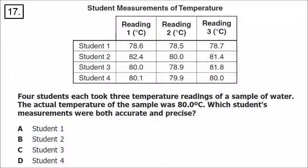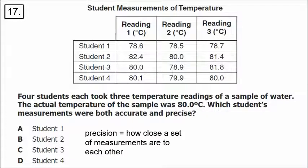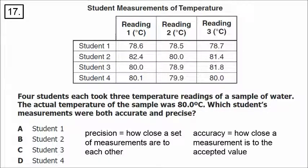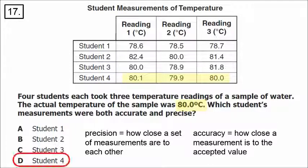Number 17 involves accuracy and precision. Precision is how close a set of measurements are to each other, and accuracy is how close a measurement is to the accepted value. In student 1's data, those numbers are precise — they're close to each other — but they're not accurate because the actual temperature was 80 degrees. We're looking for data that has numbers close to each other and close to 80. The correct answer is D, student 4.